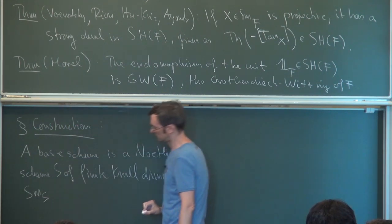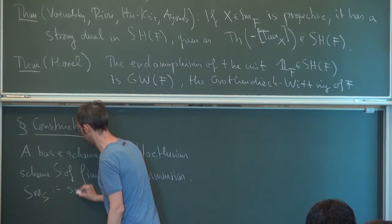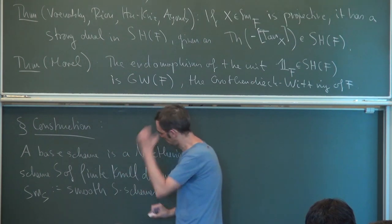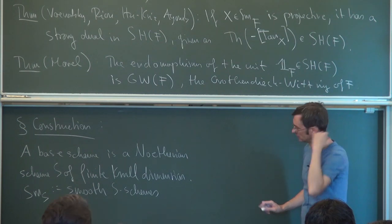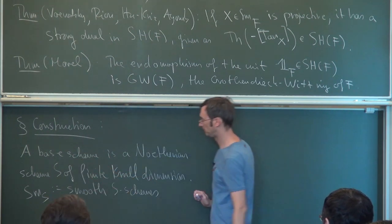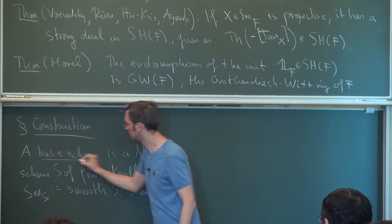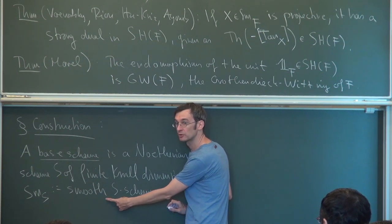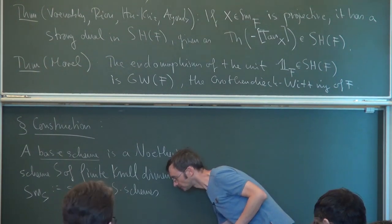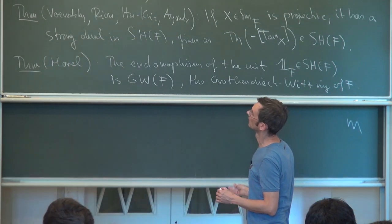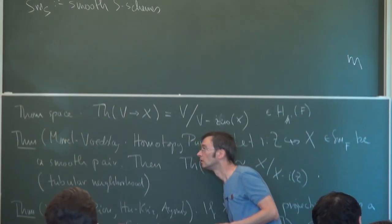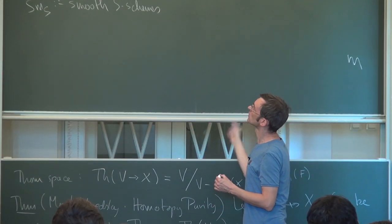And smooth S is then the category of smooth S-schemes. Smooth incorporates a finite type condition, so in particular anything in here is again a base scheme. The morphisms in here are just arbitrary morphisms. They do not have to be smooth.